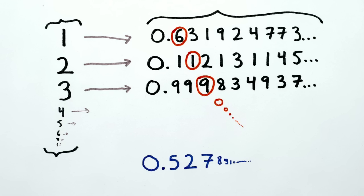So this new number will be different from all of the other numbers we've drawn lines to. But we've already drawn a line from every integer, so there's no one left to be this number's partner.